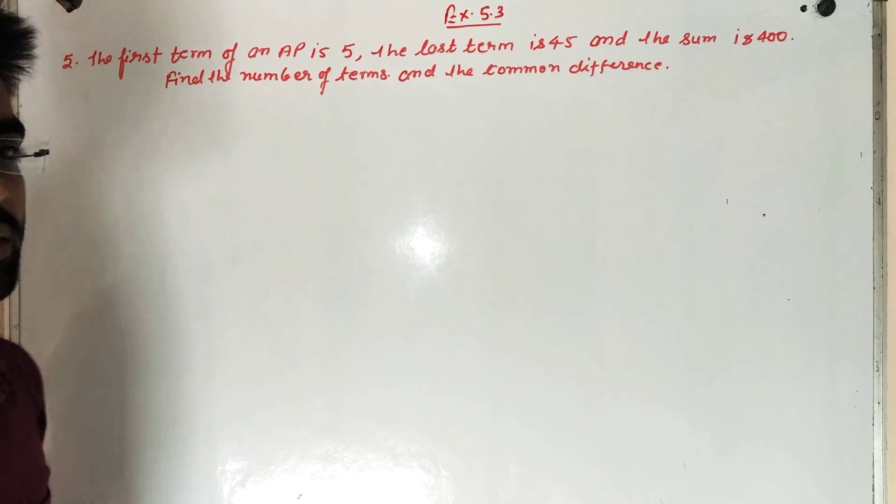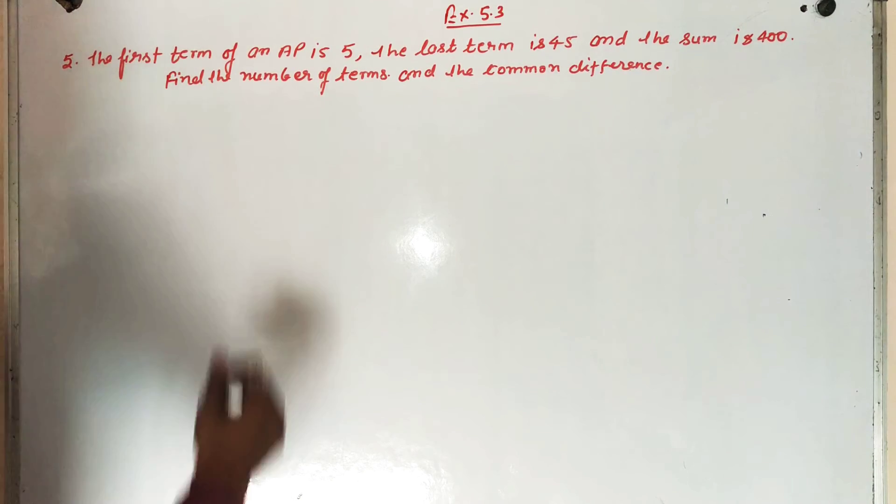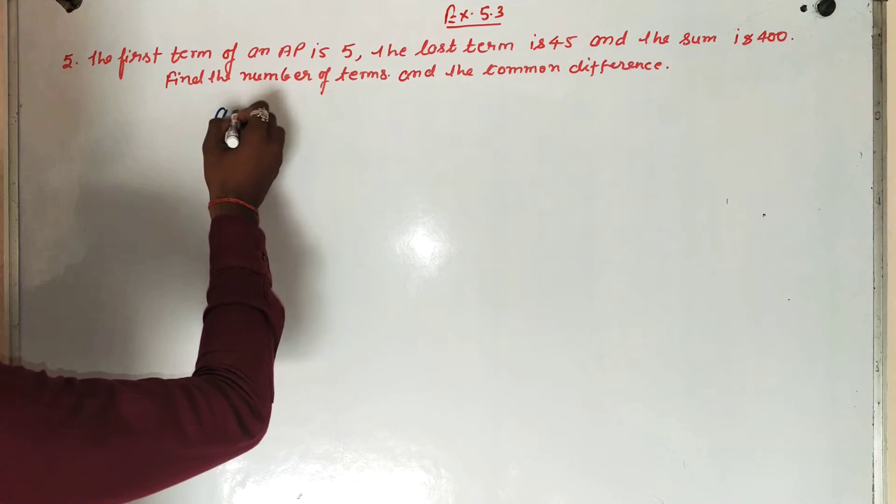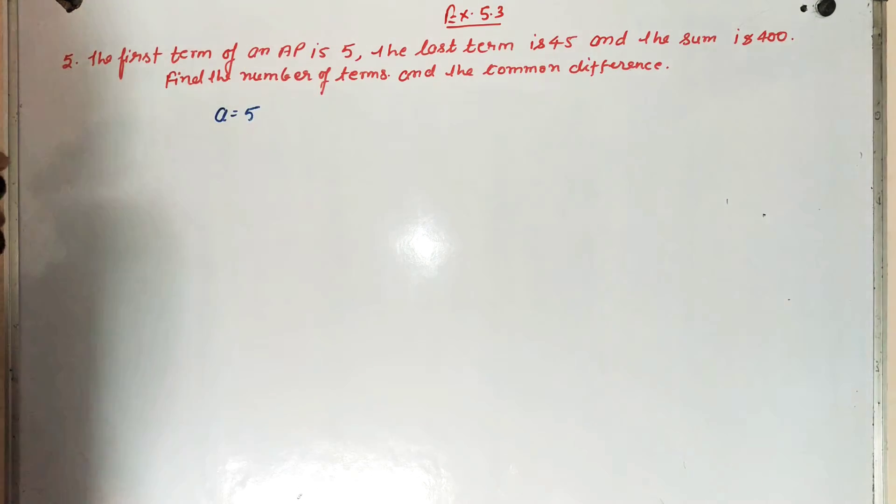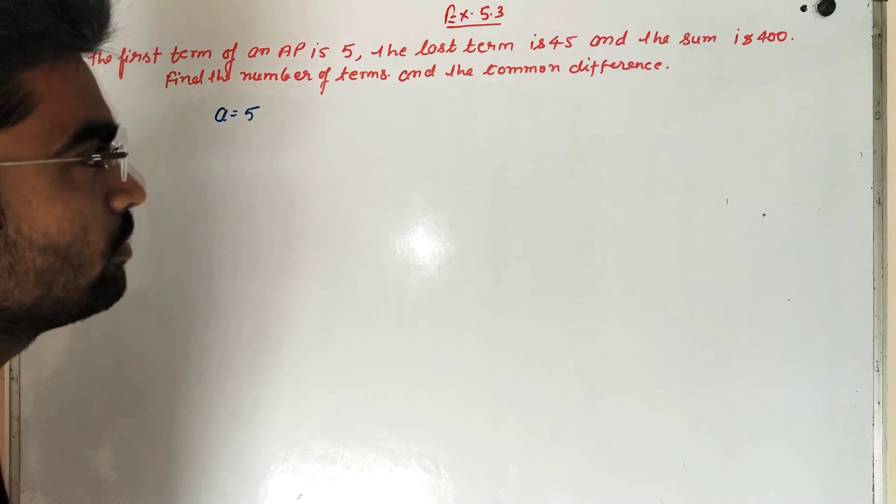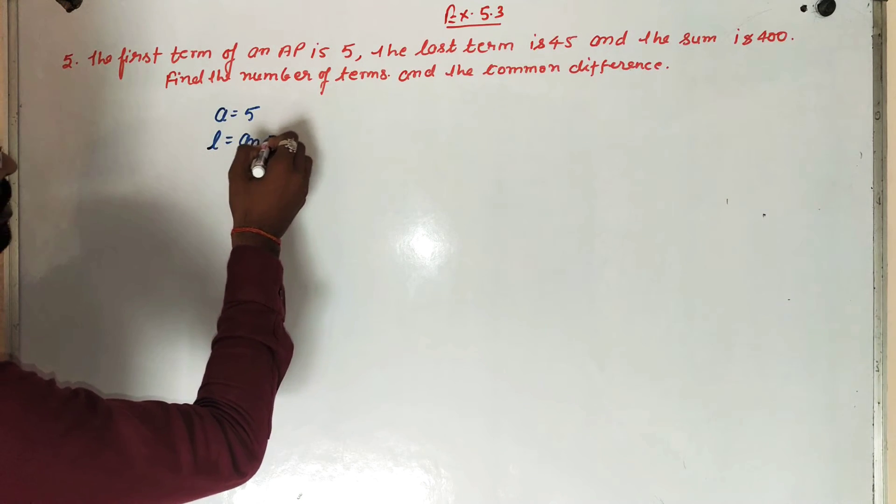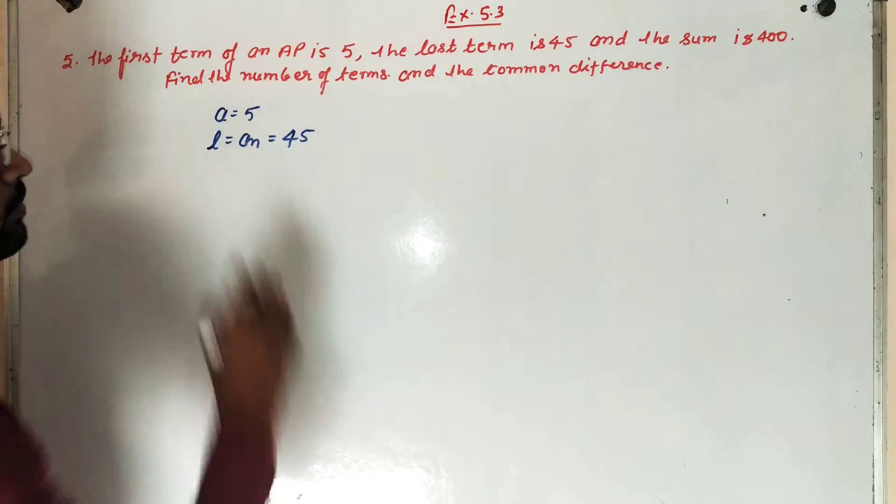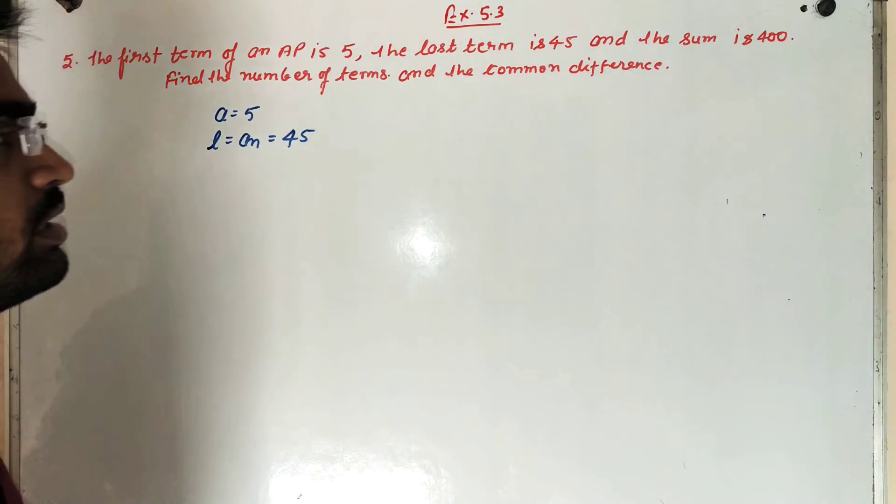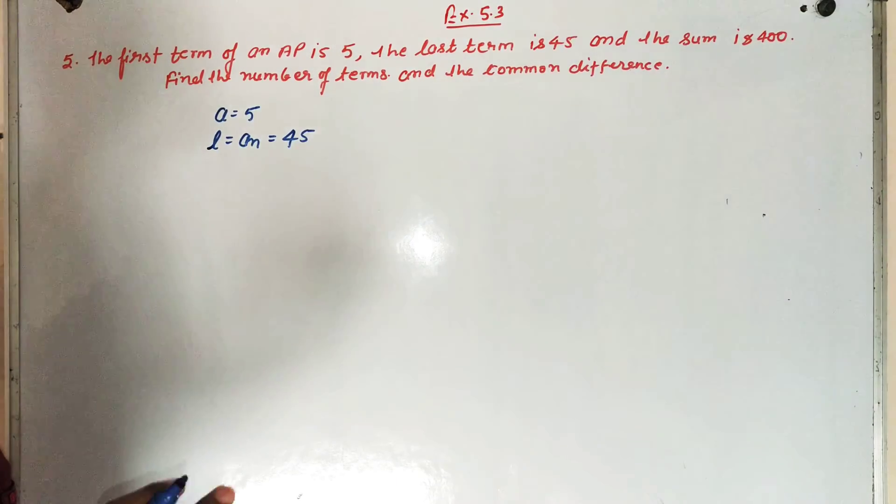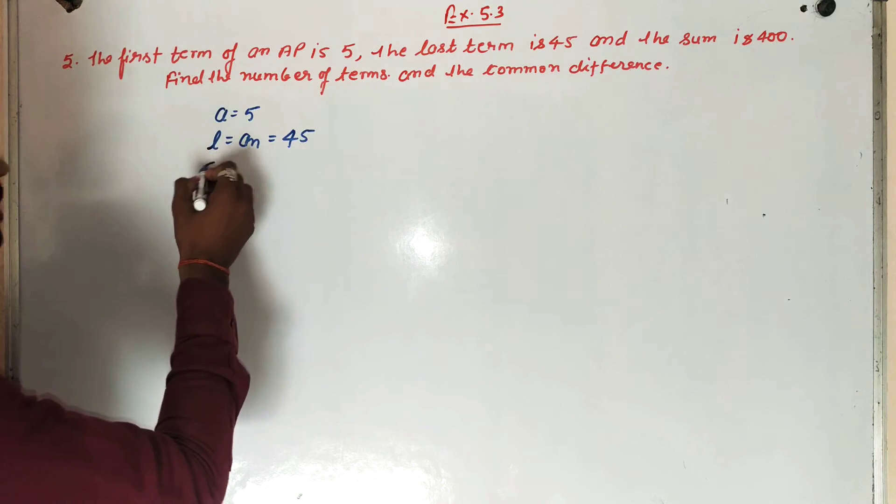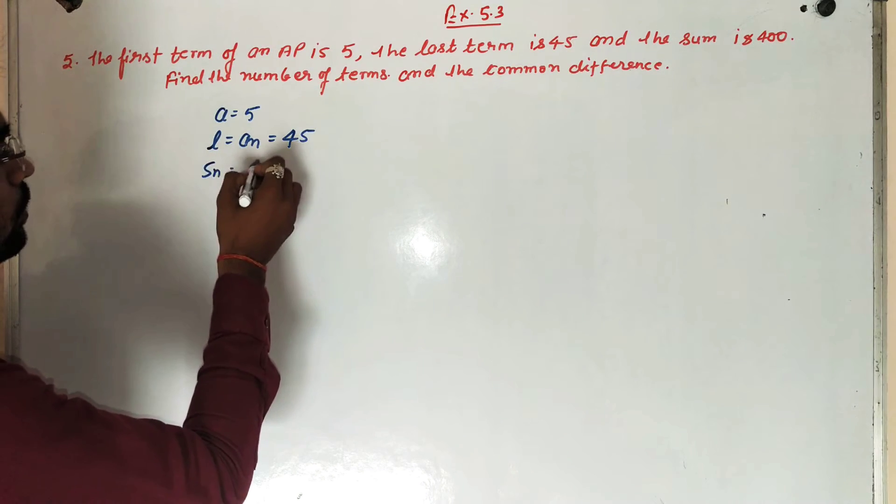The question is: the first term of an AP is 5, that means A equals 5. And the last term, that is L, or AN equals 45. And the sum is 400. Sum of 400, that means the sum of N terms, SN is 400.